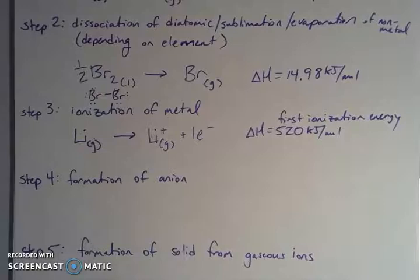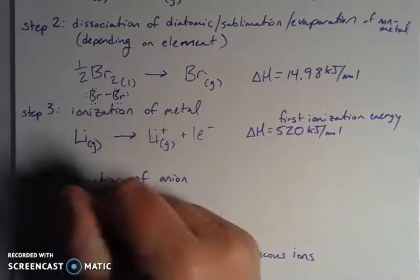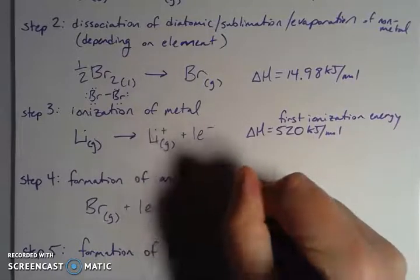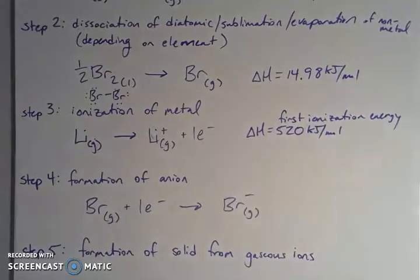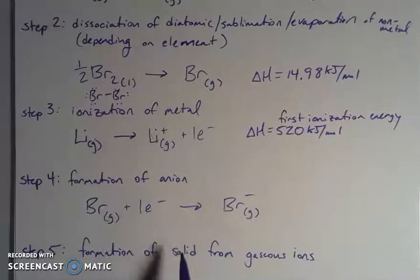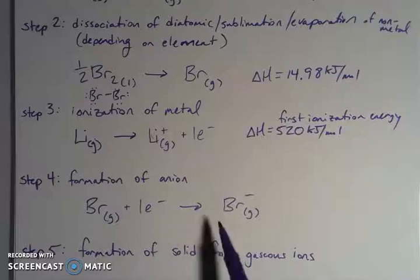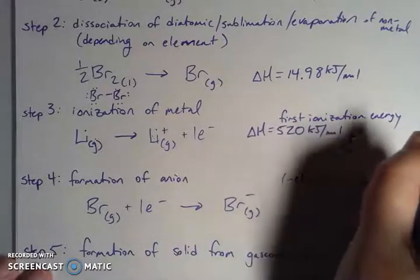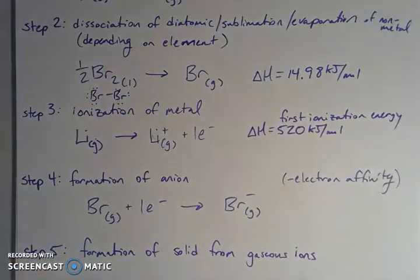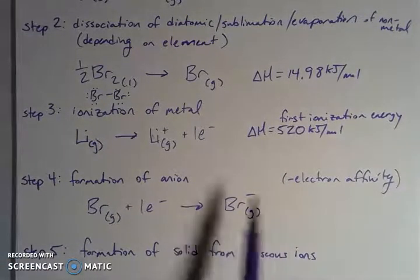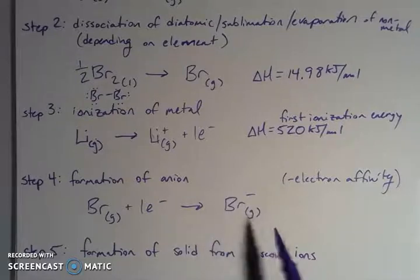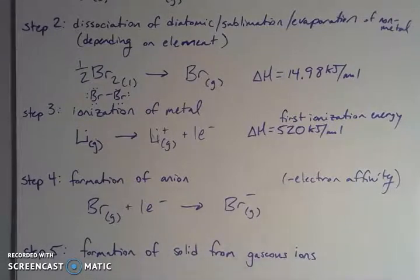So now I have a positive cation. I need to do the same thing to my bromine. My bromine is going to become bromide. I'm going from gaseous bromine, I'm going to add an electron to it, so it's being reduced to form gaseous bromide. This reduction process is going to release some energy. This is kind of a favorable thing, and this has to do with the electron affinity. This is the negative electron affinity.